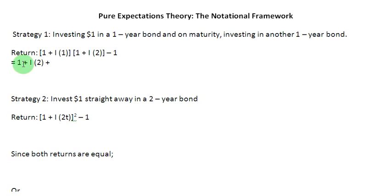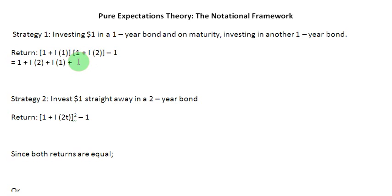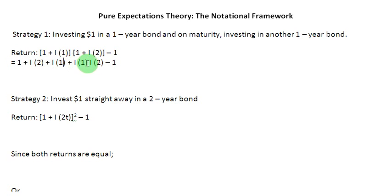After that, I put a plus sign again and then I focus my attention on this item I1, which I multiply with the first item in the second square bracket, which is 1. So that gives me an I1. And then I am going to put a plus sign again. This time I am going to pick up this term and multiply it with the second term in the second bracket, so that is going to give me I1 times I2. After that, what I see is that I have a minus 1 here, so I am going to copy that minus 1 and paste it at this place. What I see here is that this minus 1 is going to cancel out with this plus 1, so I am going to be left with this item, this item, and this item here.